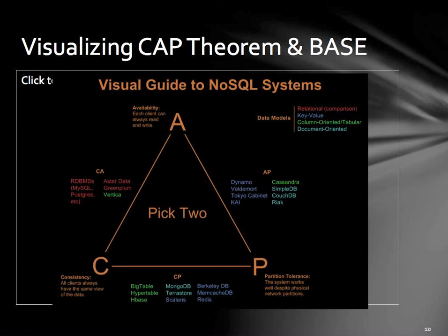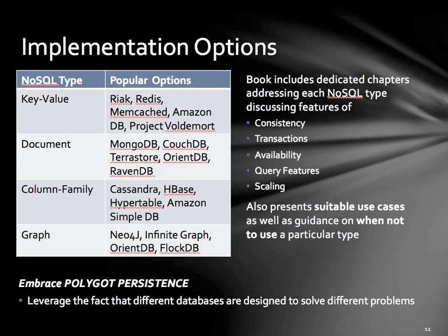There's a great picture out there — search for 'visual guide to NoSQL systems' if you want to see CAP theorem visually. The book picks a specific technology in each of the four types: Riak for key-value, MongoDB for document, Cassandra for column family, and Neo4j for graph. The book really runs down each one of these types, dedicates a full chapter to the information, with good cases and bad cases, patterns, anti-patterns, where you should try to use them or definitely should not. And they bring up the phrase polyglot persistence somewhat regularly.